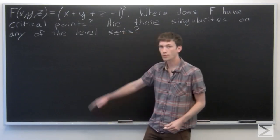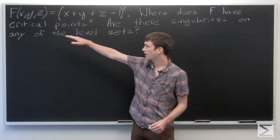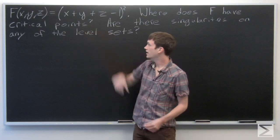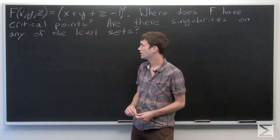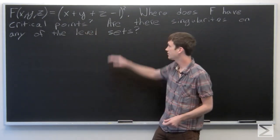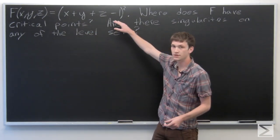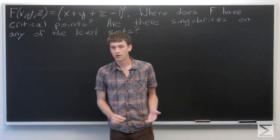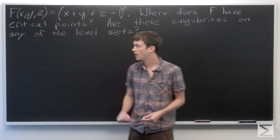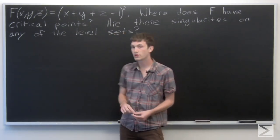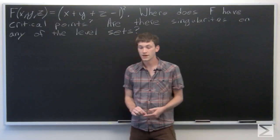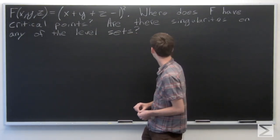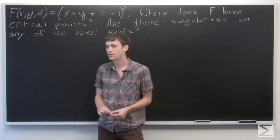In this problem we're given f(x, y, z) is equal to the quantity x plus y plus z minus 1, squared. We want to know where f has critical points and if there are any level sets that have singularities.